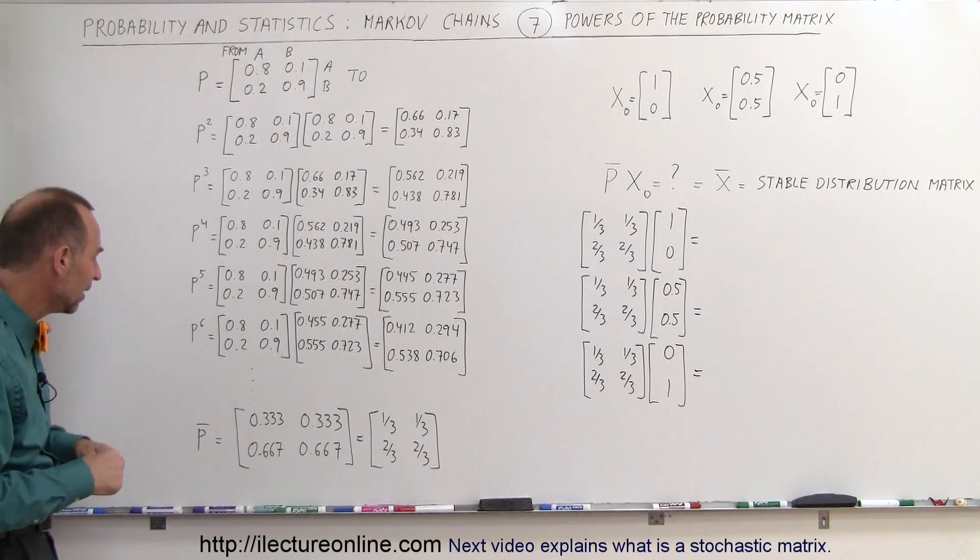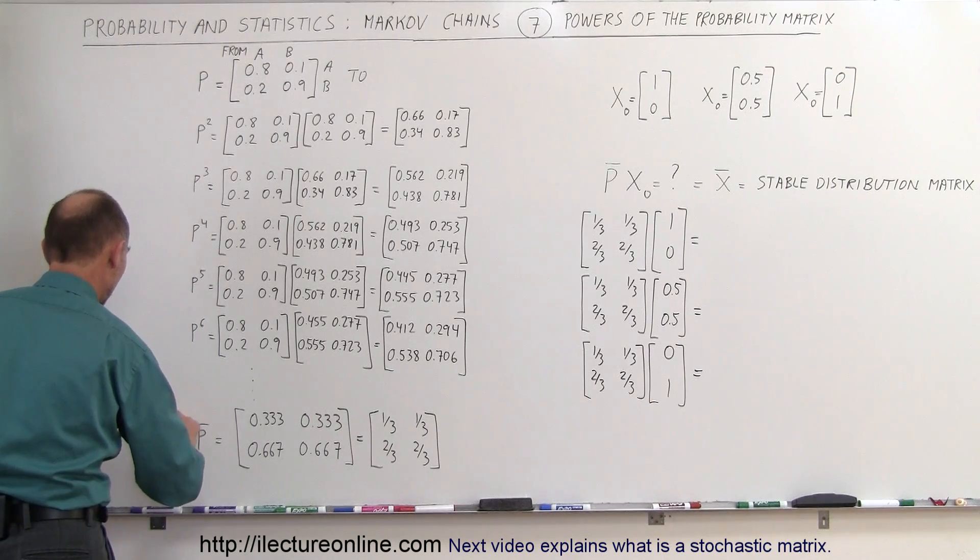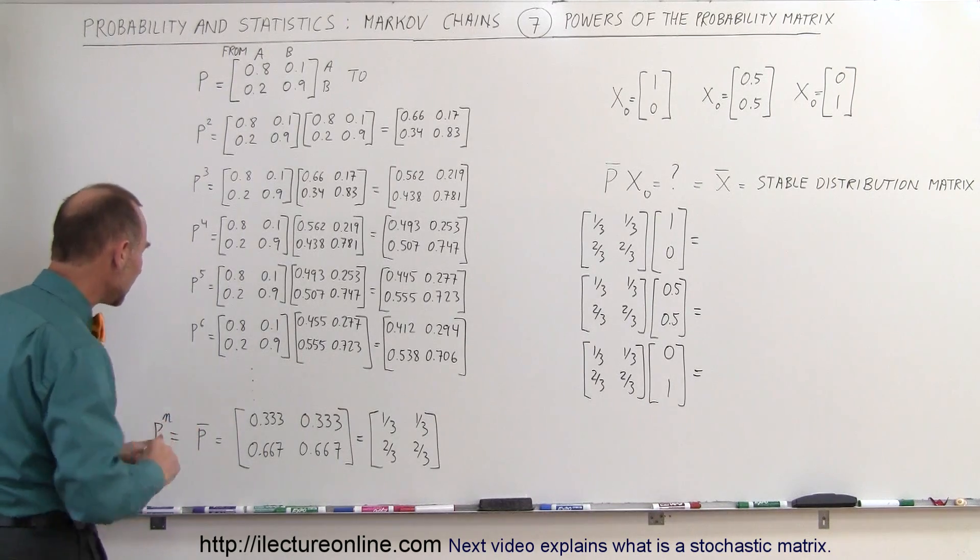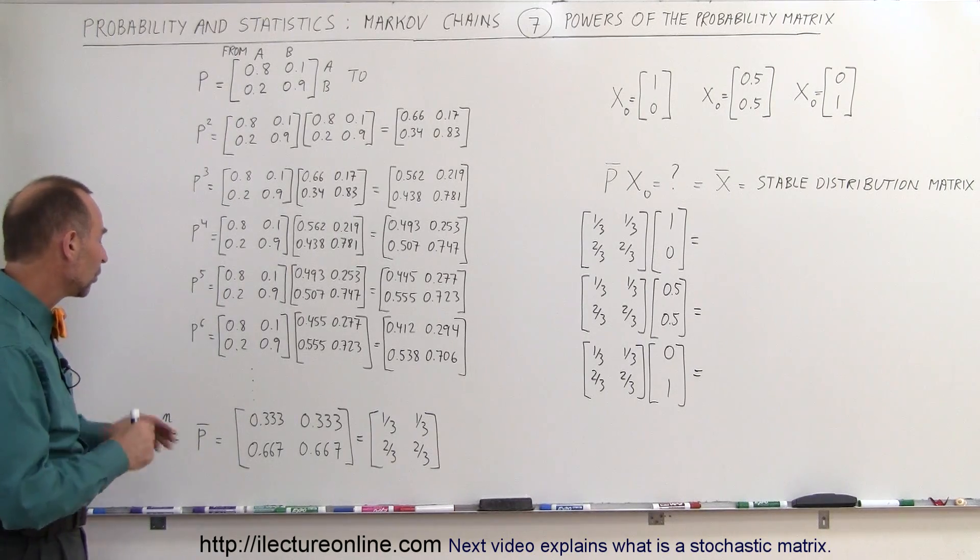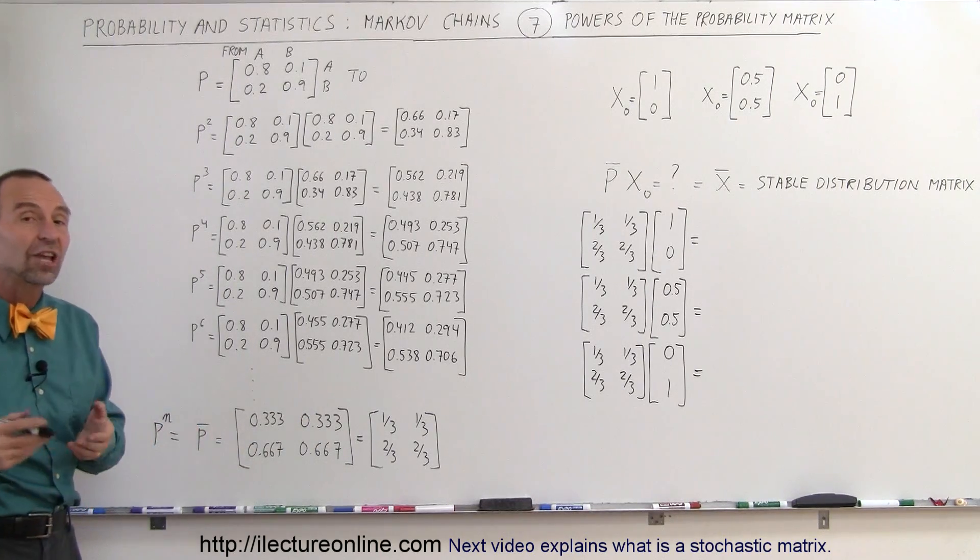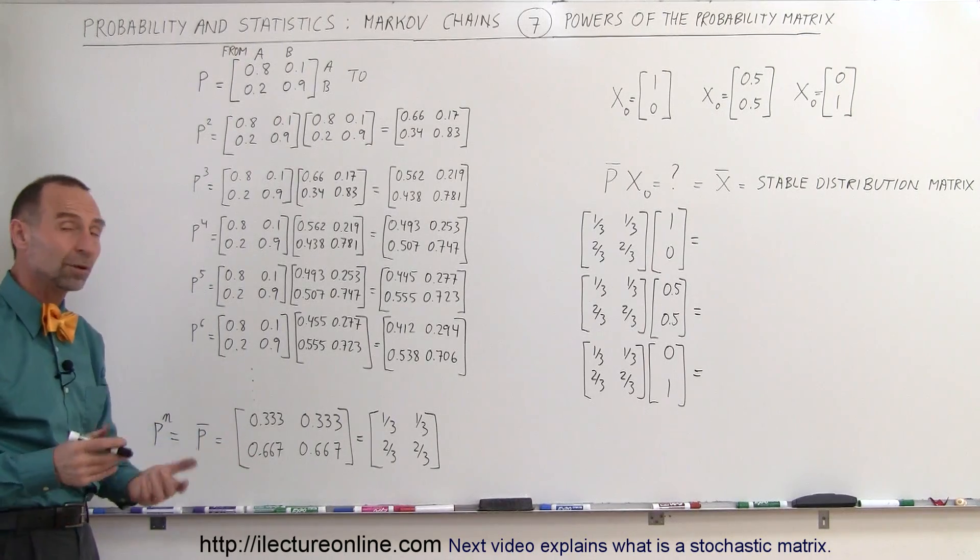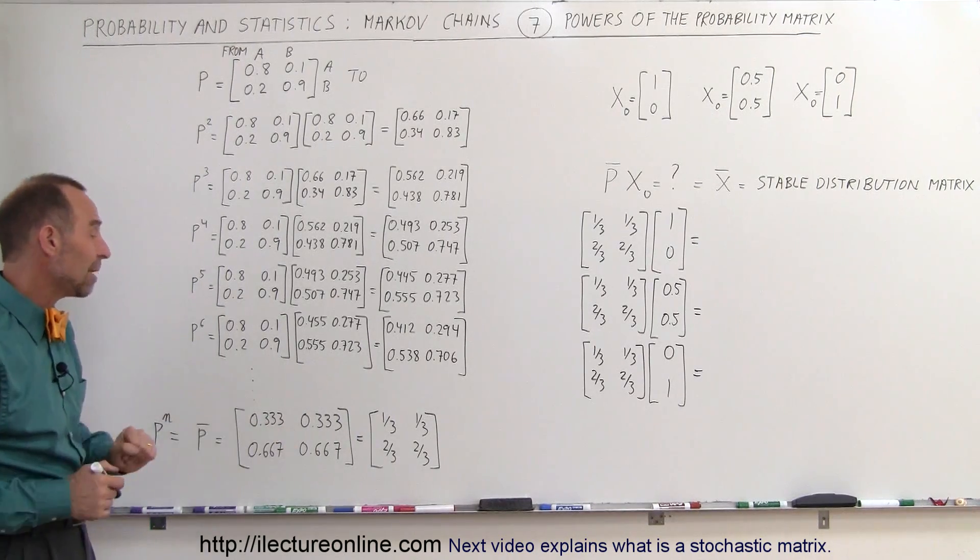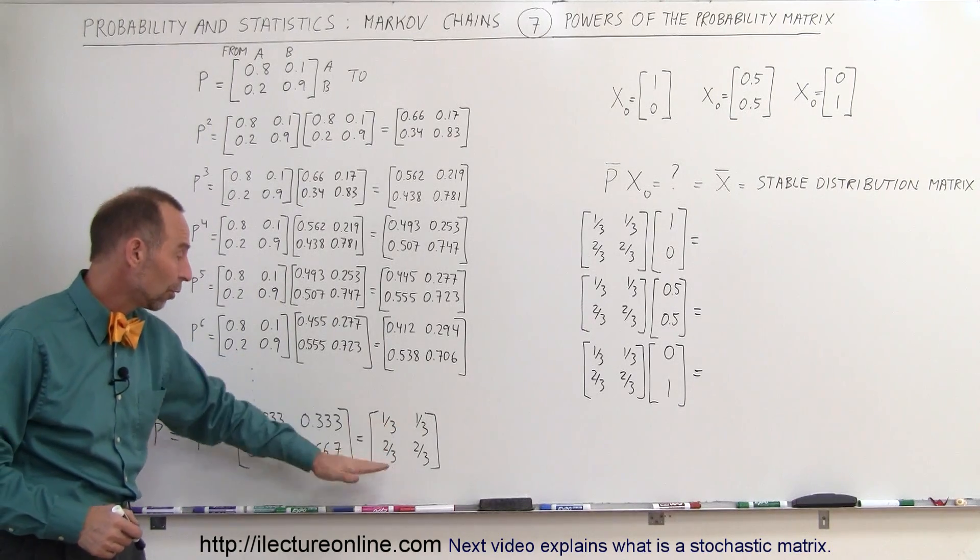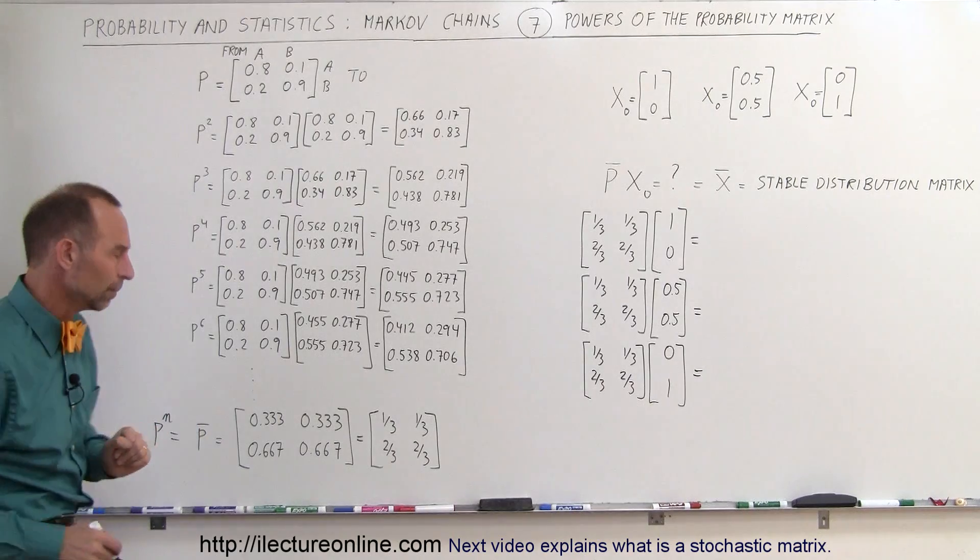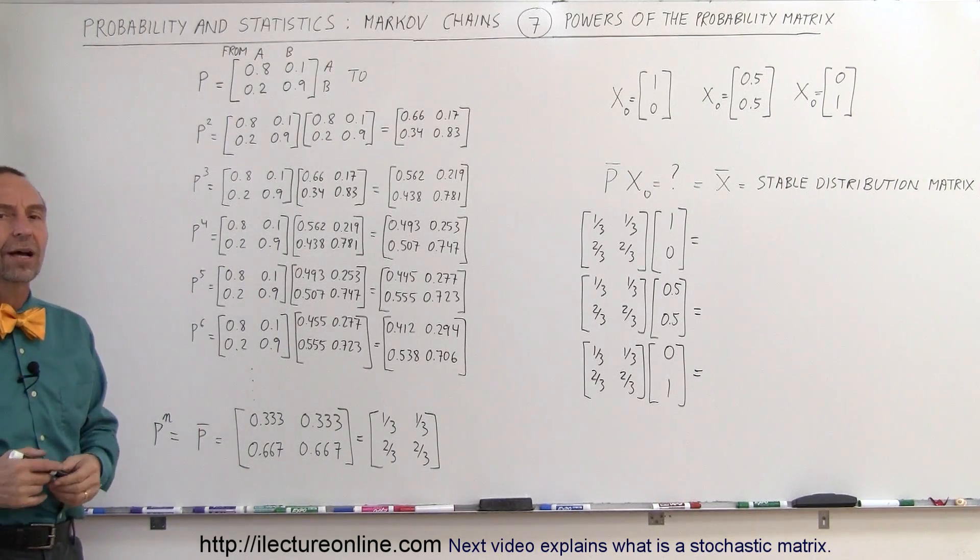And if we just keep doing that, eventually, we get at some value for n, P to the nth power, whatever n requires to be, we get the stable probability matrix. So in other words, we get something that will no longer change when we keep multiplying it by itself. So we can get this matrix multiple times P, we get the very same matrix. Basically, it's one-third, one-third in the first row, and two-thirds, two-thirds in the second row. You will get this after you do this about 12 times.